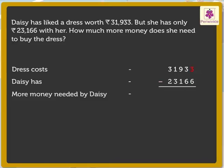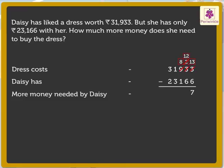As the ones are not enough, we regroup the tens. Thus, 3 tens and 3 ones is equal to 2 tens and 13 ones. Therefore, 13 minus 6 is equal to 7 ones. Subtract the tens: 2 minus 6. As the tens are not enough, we regroup the hundreds. Here, 9 hundreds and 2 tens is equal to 8 hundreds and 12 tens. Therefore, 12 minus 6 is equal to 6 tens.